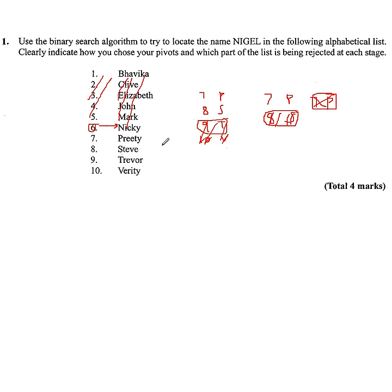Now this should be a bit neater and maybe I'd write here, choose the middle value, Nigel is before Nicky in the alphabet, Nigel is after Nicky in the alphabet, so discard all those before and so on, just as I've been talking through really. But that's worth 4 marks. Thank you very much.